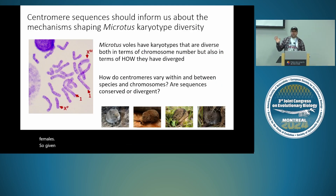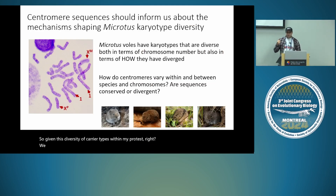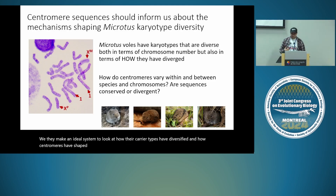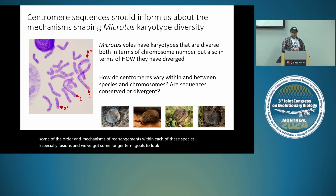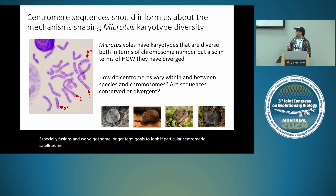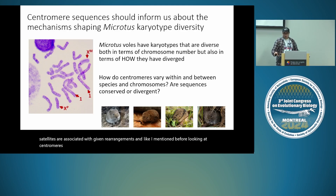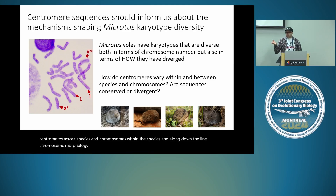Given this diversity of karyotypes within Microtus, they make an ideal system to look at how karyotypes have diversified and how centromeres have shaped that diversity. Centromere sequence variation might indicate the order and mechanisms of rearrangements within each species, especially fusions. Our longer-term goals are to look at whether particular centromeric satellites are associated with given rearrangements, and to examine centromeres across species, chromosomes within species, and eventually chromosome morphology.